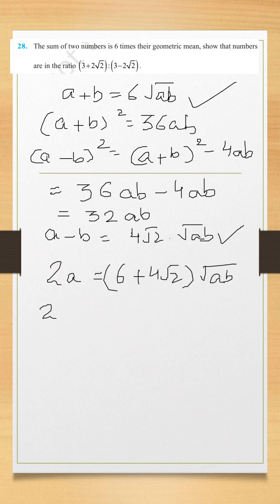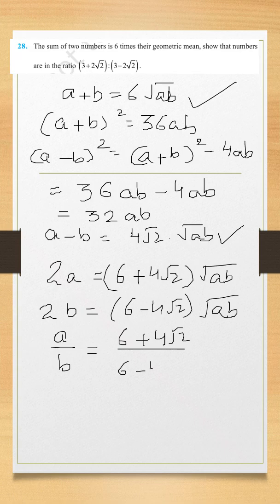If we subtract them, 2B is equal to 6 minus 4 root 2 into under root of AB. When we divide them, A by B is equal to 6 plus 4 root 2 upon 6 minus 4 root 2.